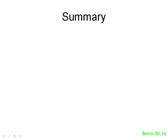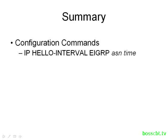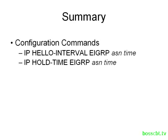So let's summarize what we covered. In terms of configuration commands, we can issue the IP hello-interval EIGRP command in order to change the hello interval, or we can issue the IP hold-time EIGRP command to adjust the hold time. Don't forget, in each one of those commands, you have to issue the AS number. The default value for the hold timer is going to be three times that of the hello timer.